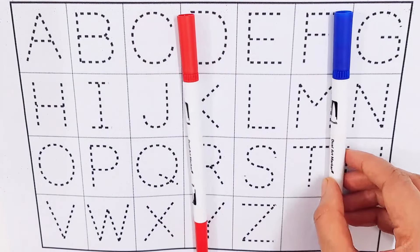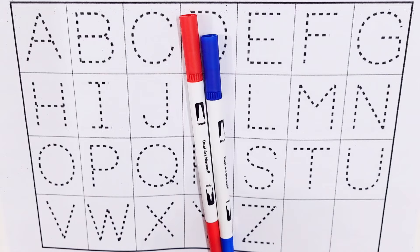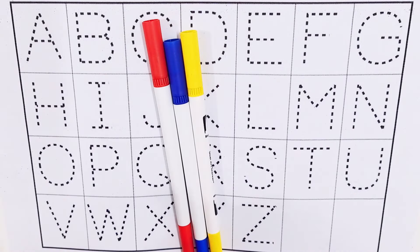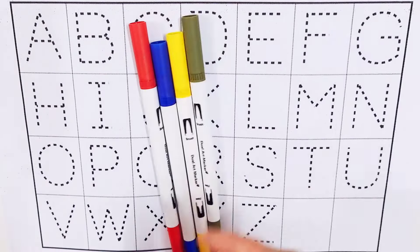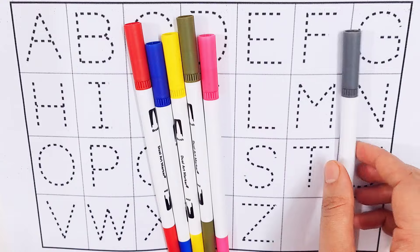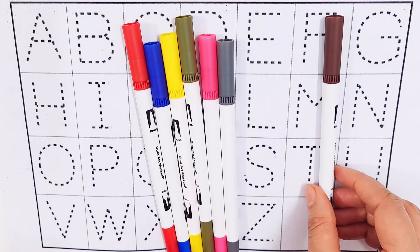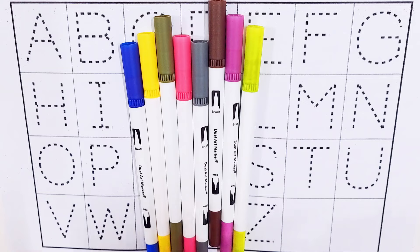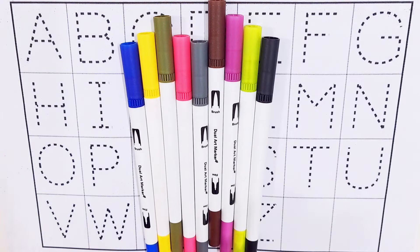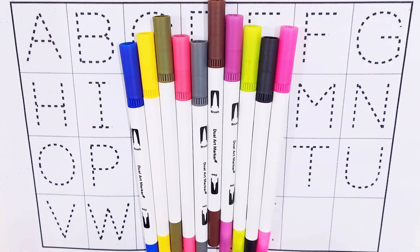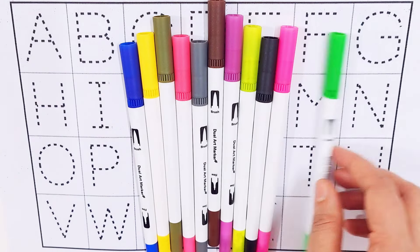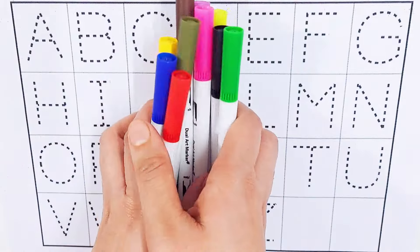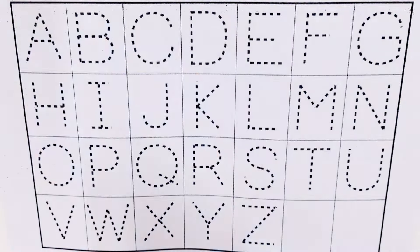Hello kids, let's learn some colors name. Red color, dark blue color, yellow color, olive color, pink color, gray color, brown color, violet color, lime color, black color, purple color, green color.